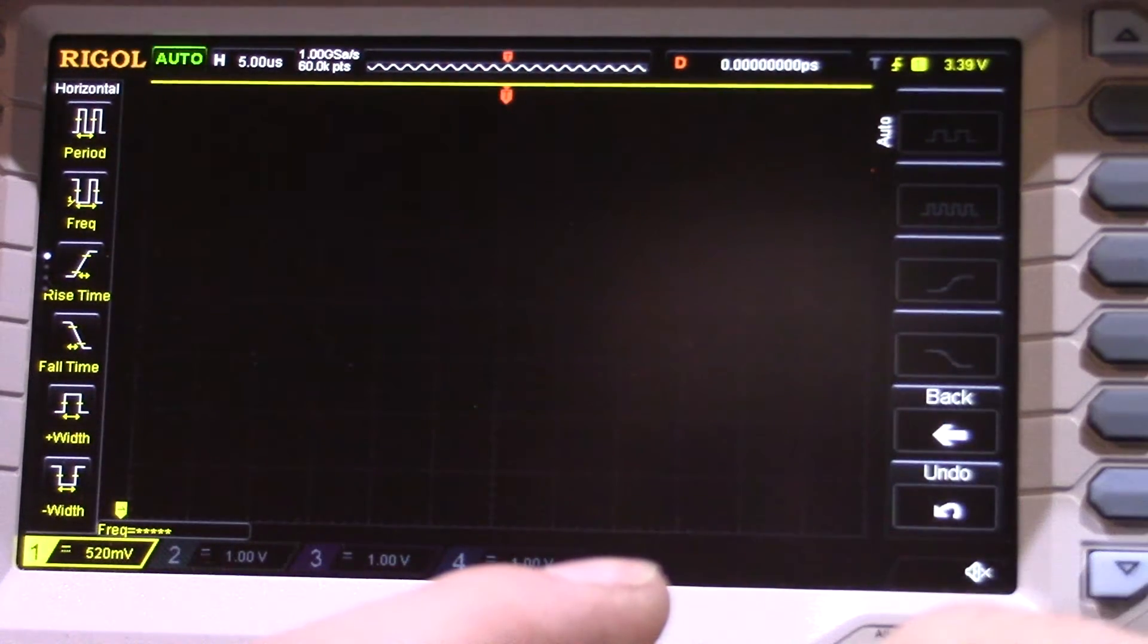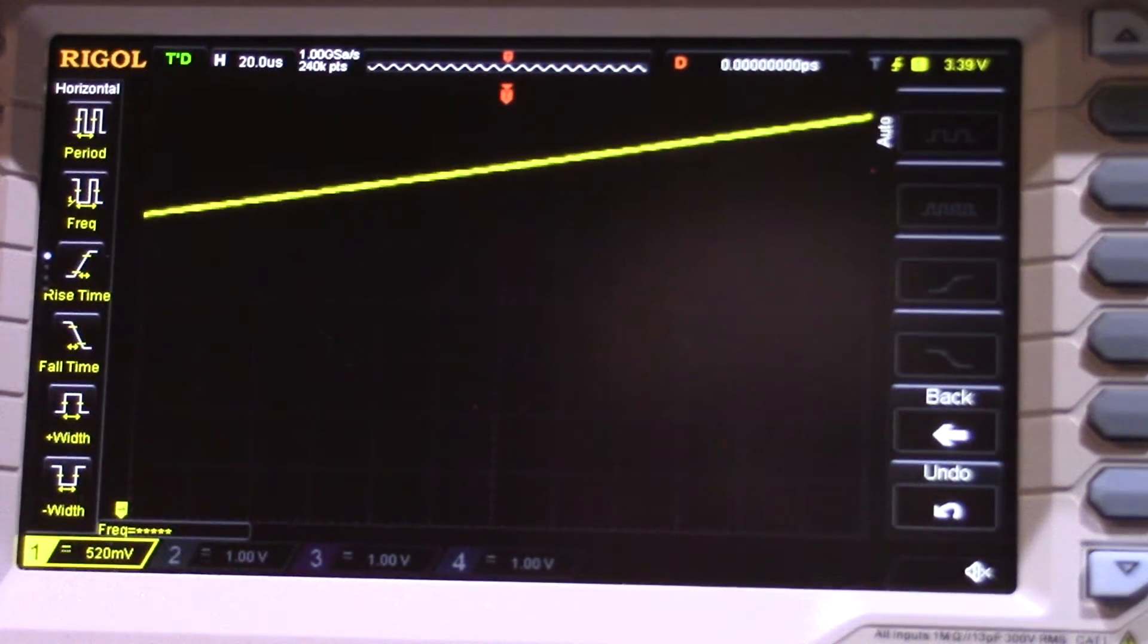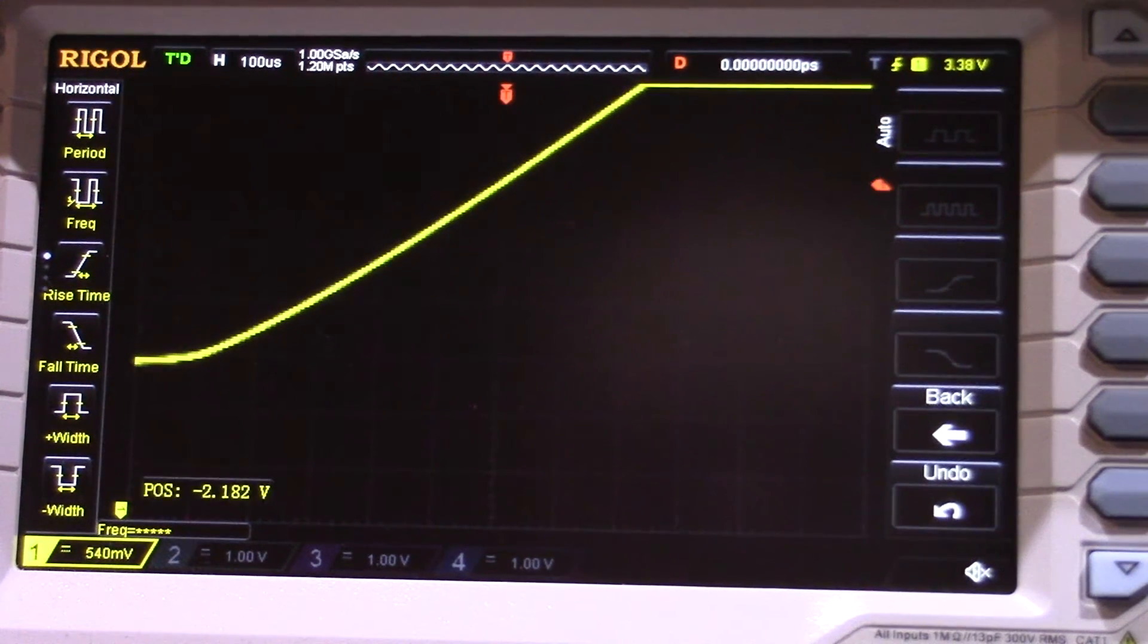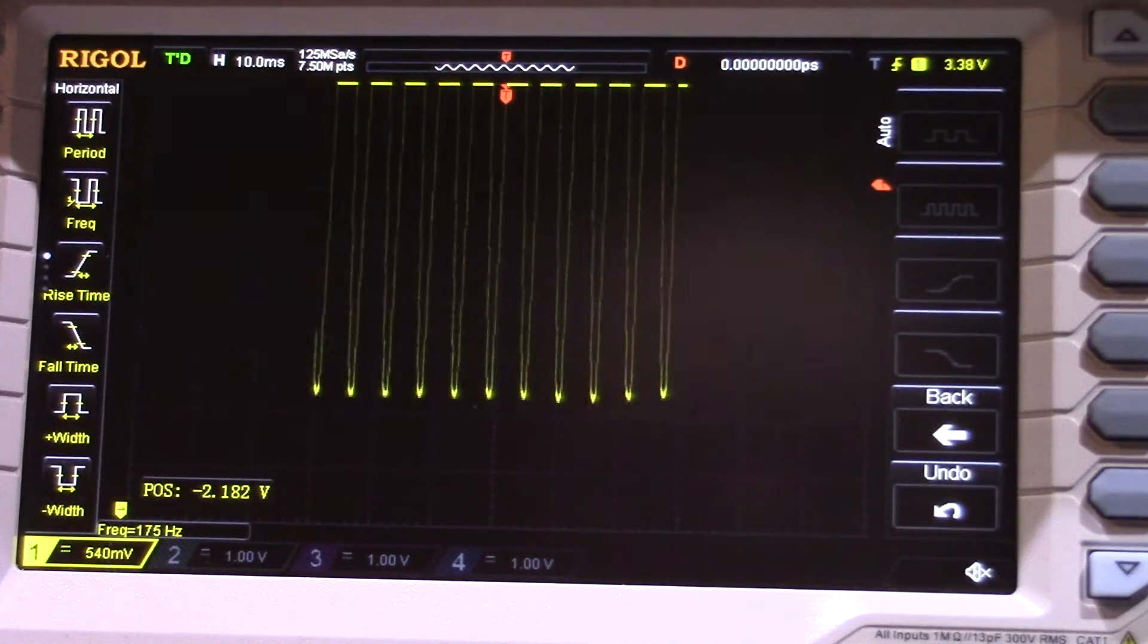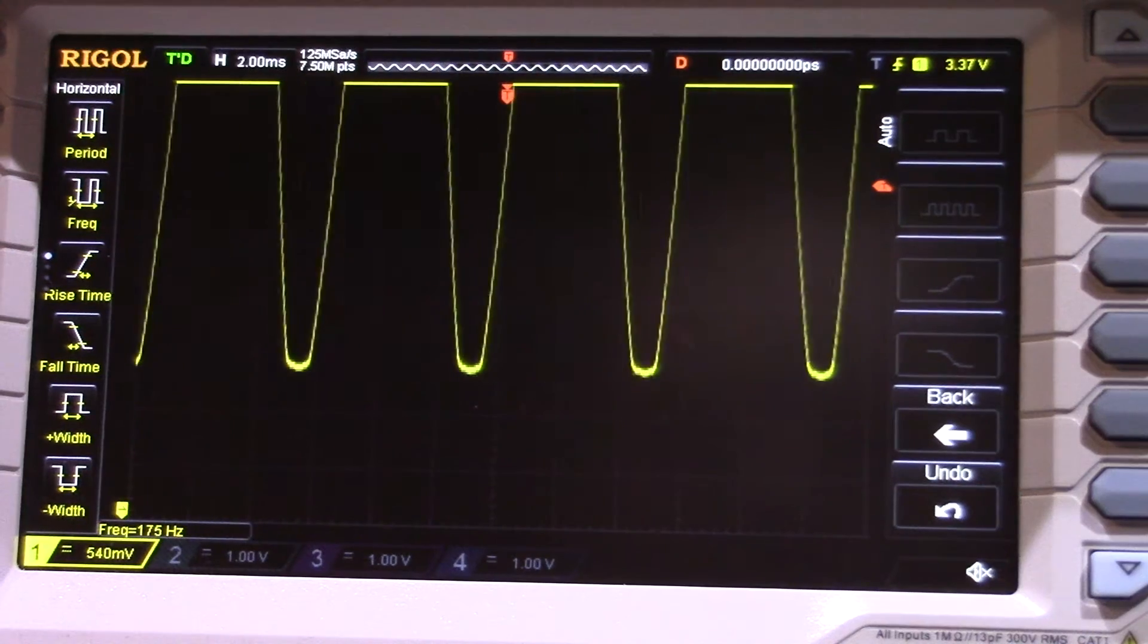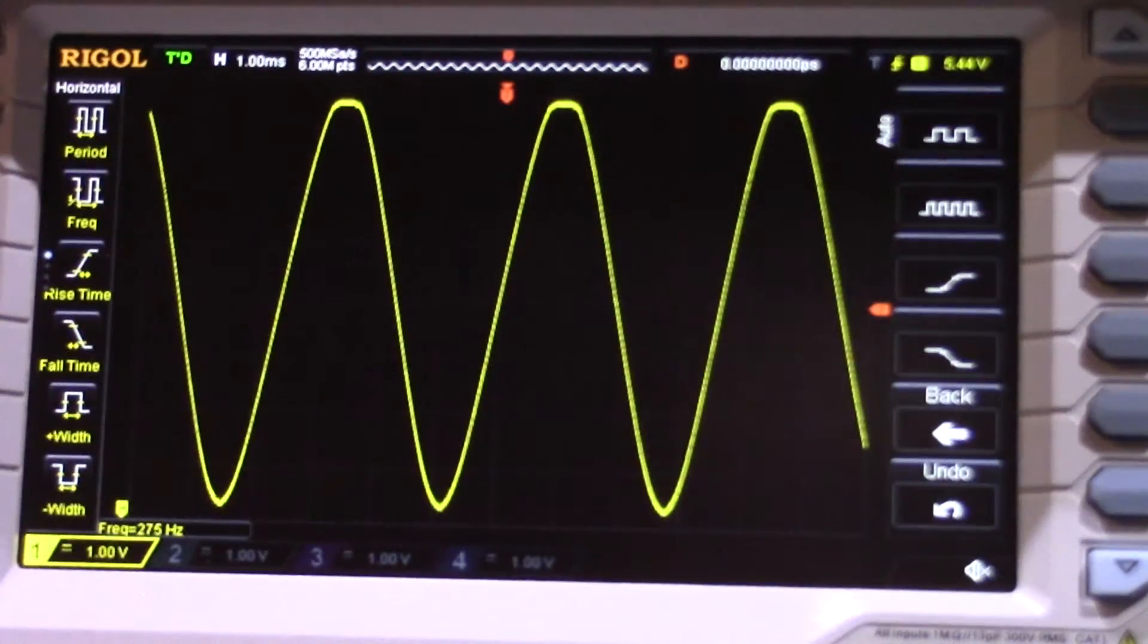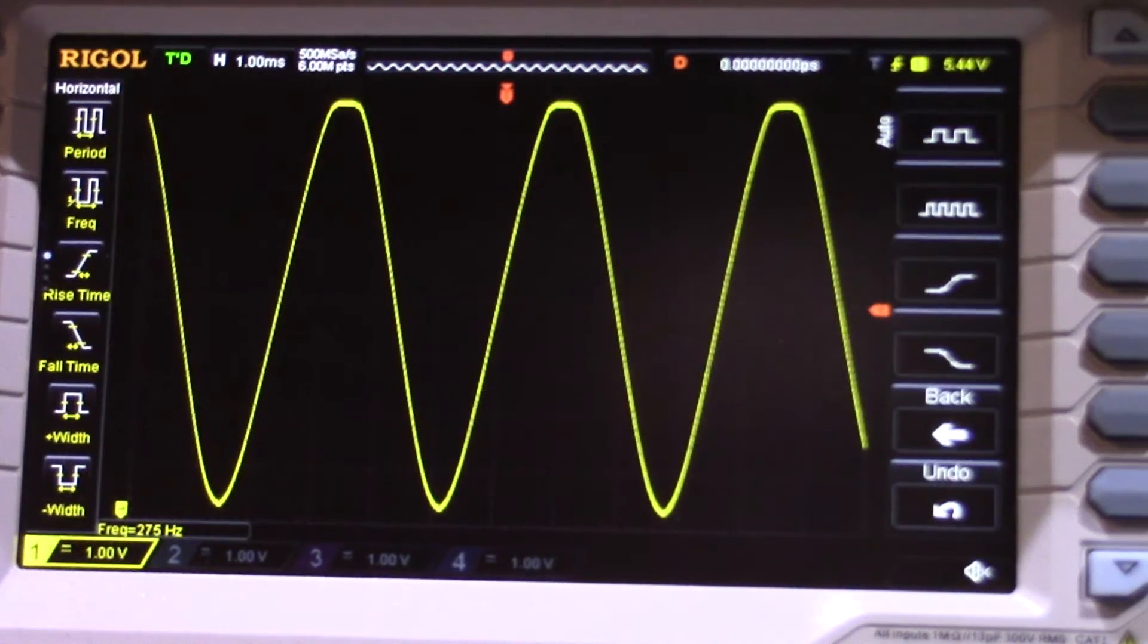So we'll select a different frequency range - we'll go for 100 to 3 kHz - and we should be able to see there we've got our waveform there. Let's adjust that a bit. Again, I am cheating there, but as you can see now, we have got a nice clean sine wave.